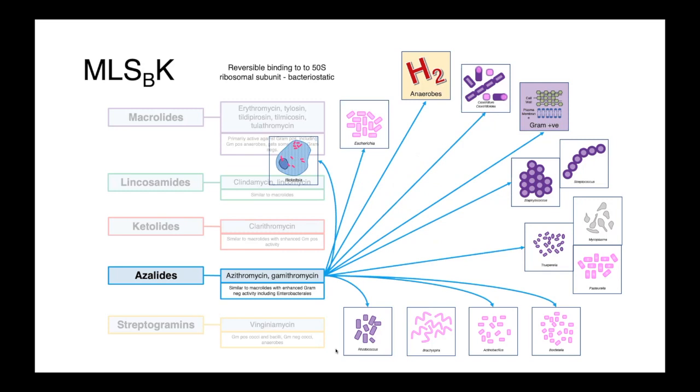Our azalides—azithromycin, which is commonly used in human medicine and companion animals, and gamithromycin, which is used in livestock production—have similar activity to the macrolides but with coverage against some gram-negative rods. Even some Enterobacterales like E. coli, and intracellular pathogens like the Rickettsia, can be effectively treated.